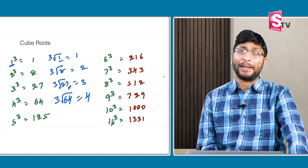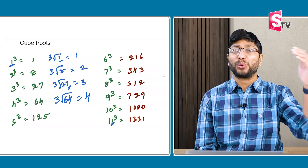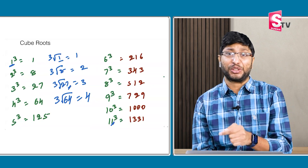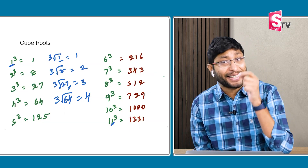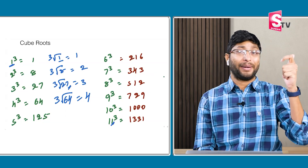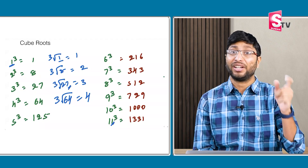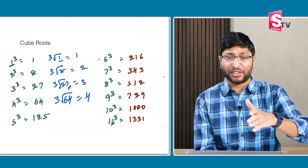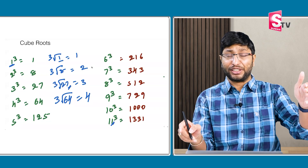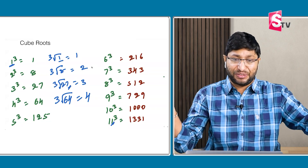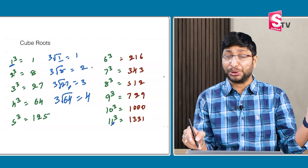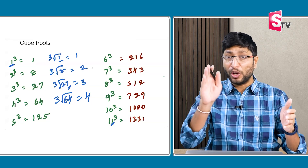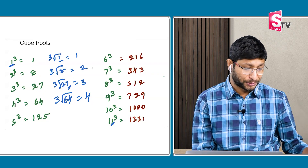To understand cube roots, you need to learn 1 to 19 cubes. If you have an idea about 1 cube to 19 cube, you can solve any cube root in less than 5 seconds, in one step. Please pause the video and write down 1 cube to 11 cube to understand this video: 1 cube is 1, 2 cube is 8, 3 cube is 27, 4 cube is 64, and so on up to 11 cube.